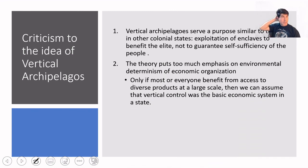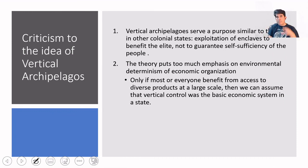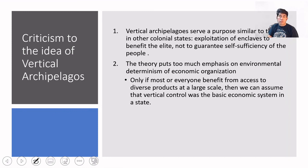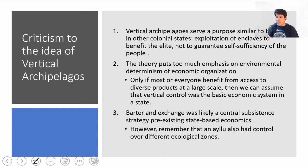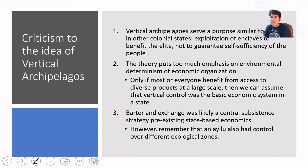Also, the theory of the vertical archipelago puts a lot of emphasis on environmental determinism. Only if most everyone benefits from access to diverse products at a larger scale can we assume that vertical control was the basic economic system in a state. That means we cannot presuppose that the presence of different islands or colonies from a state equals this type of vertical economic organization. It could also be the case that not most of the population benefits from that. And finally, barter and exchange was most likely a central subsistence strategy that pre-existed the state-based economics that, according to Murra, was expressed in this vertical control.